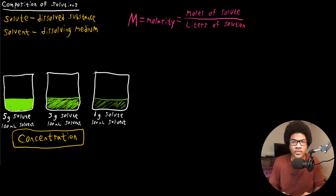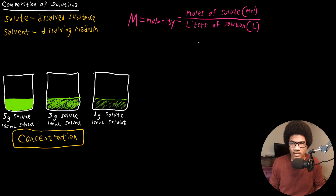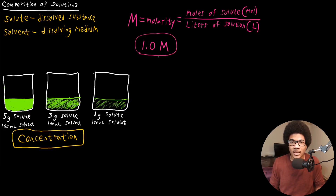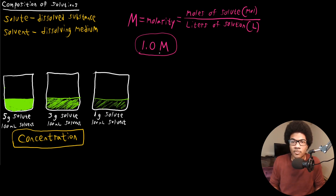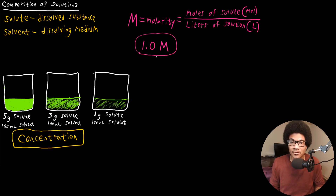If you have a particular number of moles of your solute in a volume of your solution, that gives you your molarity. The moles will be in units of moles and the volume in liters. So we might describe a solution as one M — a one molar solution — meaning the molarity is one, so you have one mole per liter of solution. That's how you classify molarity, and it tells you the concentration of the solution.